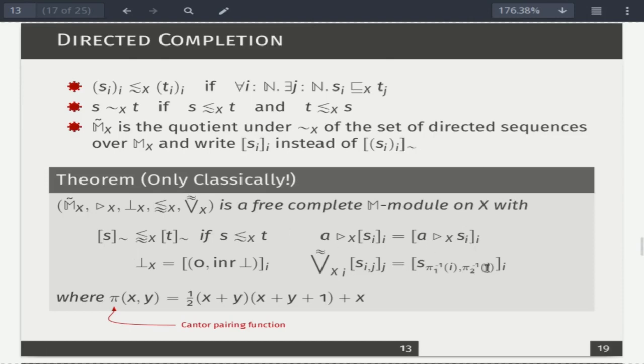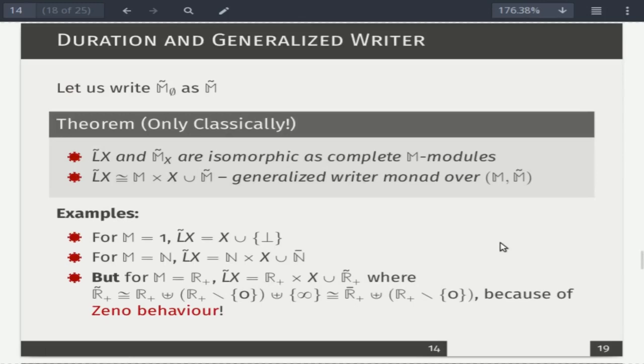So, and note this notation here. These are equivalence classes of sequences like this under this equivalence relation. So, and then using this notation, we can now define a complete m-module structure on mx tilde, on the quotient, and show that the resulting complete m-module is a free complete m-module on x. And that's, of course, only classically valid because of this equivalence class is occurring everywhere. So this involves lots of choices, and of course subsequently proving that the result on the right-hand side doesn't depend on the choice.